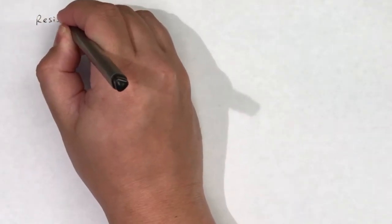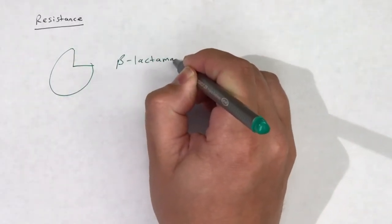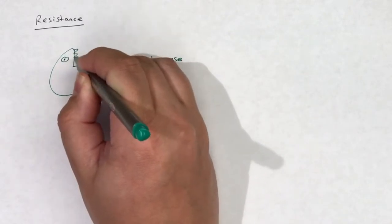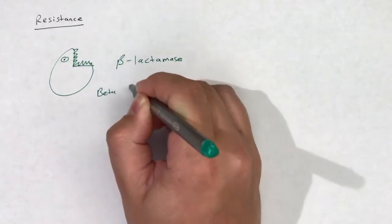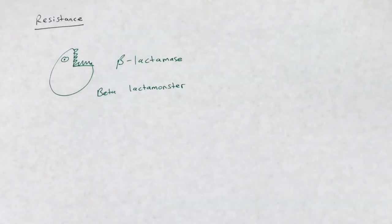Beta-lactamase degradation remains the most prevalent mechanism of resistance to first-generation cephalosporins. First-generation cephalosporins share mechanisms of resistance with other cephalosporins. Refer to the cephalosporin overview video for more details.